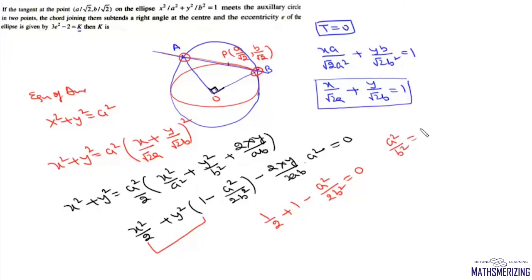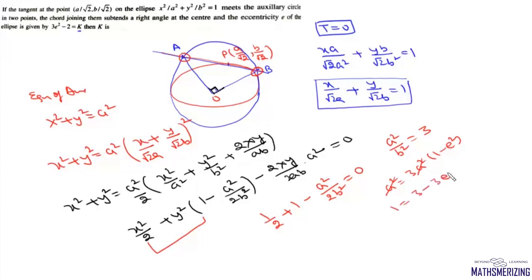From this condition, a²/b² = 3. Since b² = a²(1 - e²), we substitute to get a² = 3·a²(1 - e²), so 1 = 3 - 3e², which gives 3e² - 2 = 0. Therefore the value of 3e² - 2 is simply 0, and that is the answer to this question.